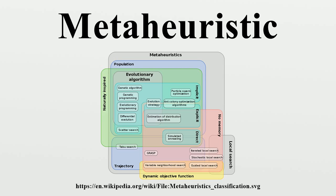Classification: There are a wide variety of meta-heuristics and a number of properties along which to classify them. One approach to characterize the type of search strategy is local search versus global search. One type of search strategy is an improvement on simple local search algorithms. A well-known local search algorithm is the hill-climbing method, which is used to find local optimums. However, hill-climbing does not guarantee finding global optimum solutions. Many meta-heuristic ideas were proposed to improve local search heuristics in order to find better solutions. Such meta-heuristics include simulated annealing, tabu search, iterated local search, variable neighborhood search, and GRASP. These meta-heuristics can both be classified as local search-based or global search meta-heuristics.